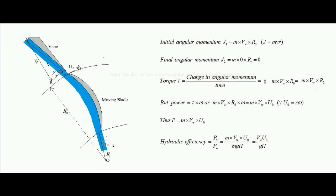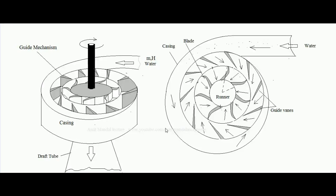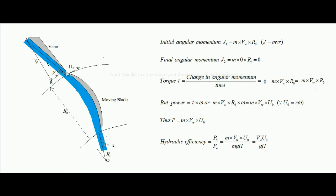Now we will talk about how torque is developed over the runner. Choosing one guide vane and one moving blade: the blade is moving in the tangential direction, so force is developed over the blade in the tangential direction. The average tangential force on the blade multiplied by the radius is what the torque is.